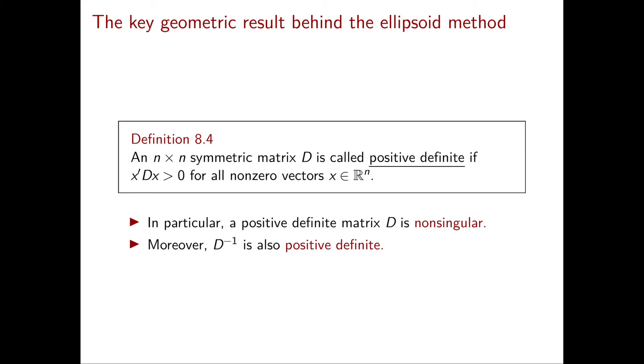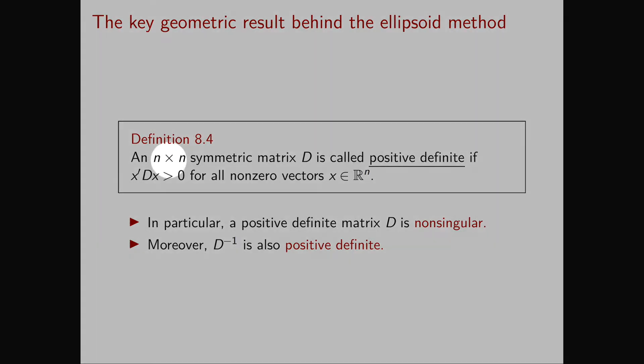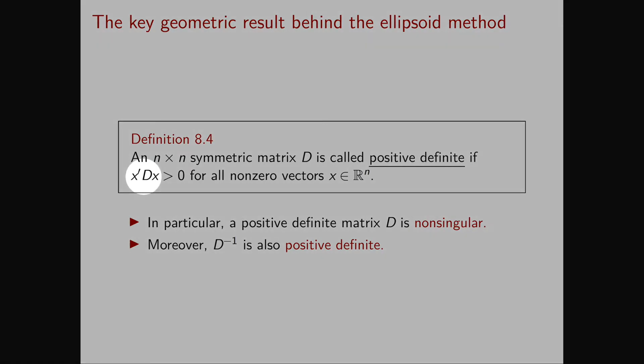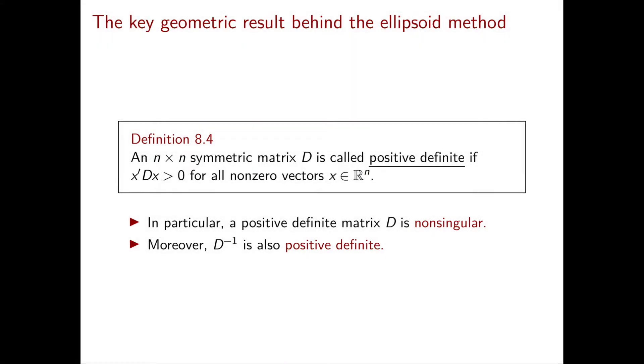The first thing we need to define are positive definite matrices. An n by n symmetric matrix D is called positive definite if x transpose Dx is strictly positive for all non-zero vectors x in R^n. Note that x transpose Dx is a quadratic function, so in particular it is not linear.